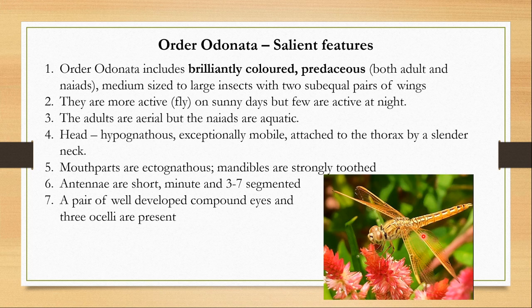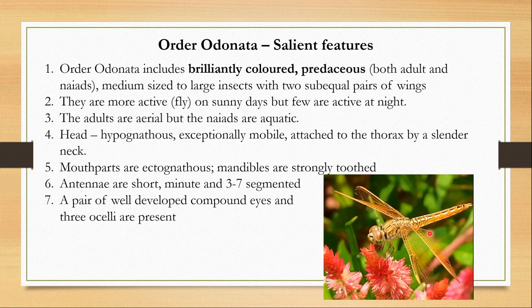These insects are medium-sized to large-sized and have two sub-equal wings on each side — two pairs of wings where each pair differs in size from the other. They are mostly active on sunny days; if you look at the sky near an aquatic body, you would see many dragonflies flying. However, some species are also active at night.